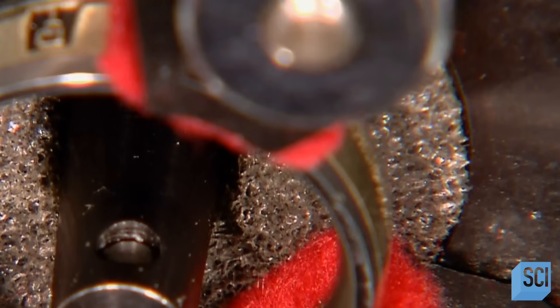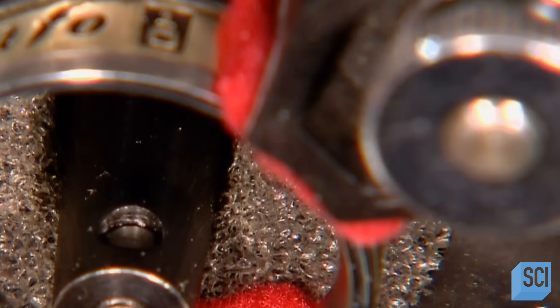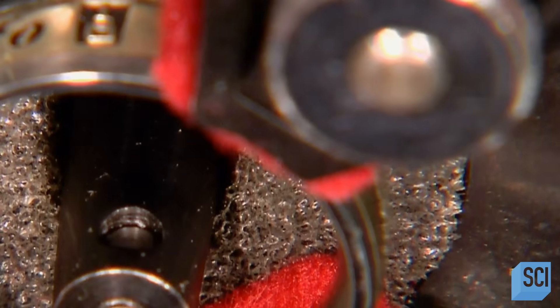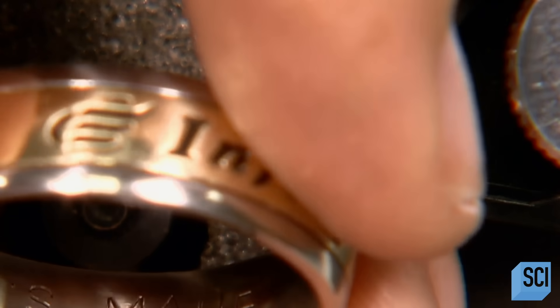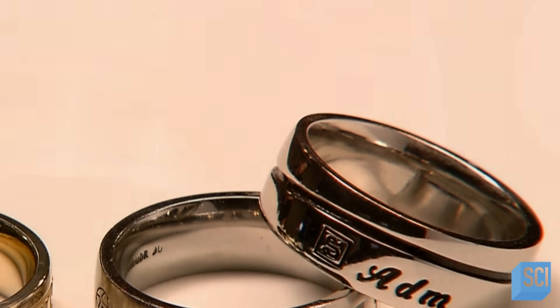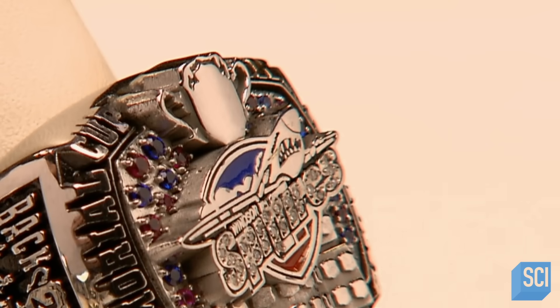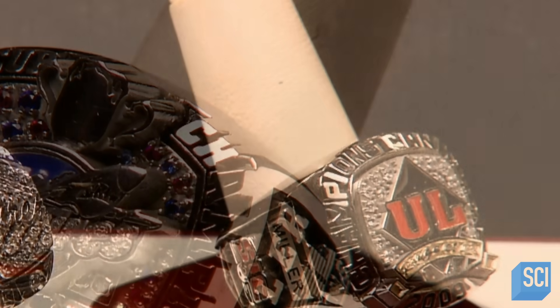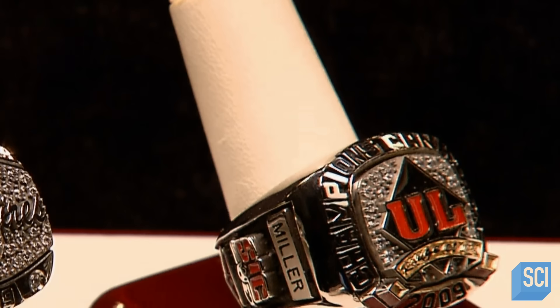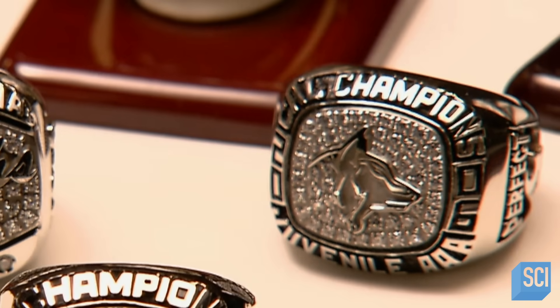Finally, a computer-guided engraving machine inscribes any name or personal message customers request be written on or inside their rings. The tradition of the class ring dates back to the 1800s. Championship rings, a wearable trophy of sorts, are more recent custom. Both make a proud and triumphant fashion statement.